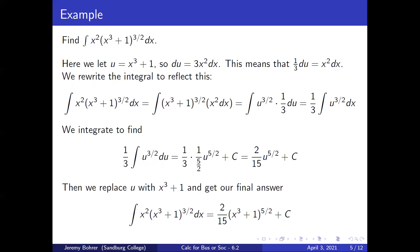We integrate to find that one-third times the integral of u to the three-halves du is one-third times one over five-halves times u to the five-halves plus c, which is two-fifteenths u to the five-halves plus c. We replace u with x cubed plus 1 to get the final answer: the integral of x squared times x cubed plus 1 to the three-halves dx equals two-fifteenths times x cubed plus 1 to the five-halves plus c.